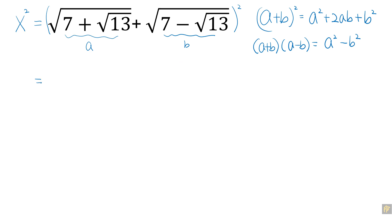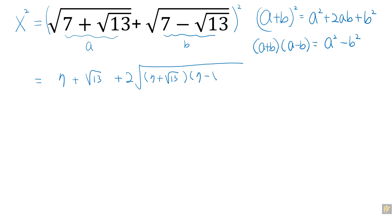So when you square them, what's going to happen is the first term will be (7 + √13)². Now, we are going to have two times √(7 + √13) times (7 − √13). Lastly, what we have is b², which is (7 − √13)². We have a positive √13 and a negative √13.